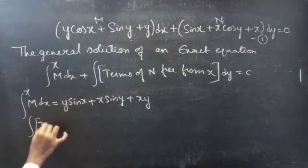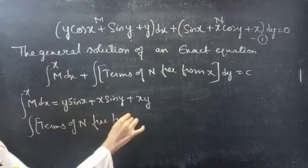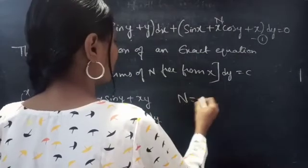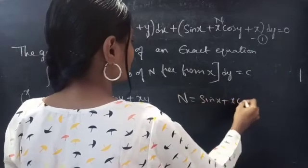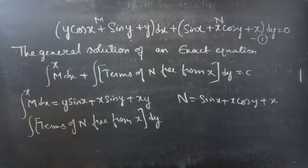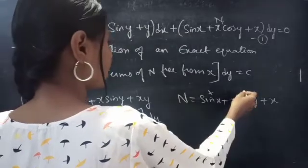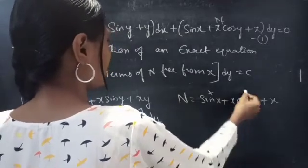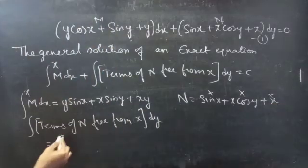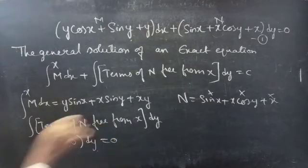Now for the second integral: integral of terms of N free from x, into dy. We have N equals to sin x plus x cos y plus x. There is no term in N which is free from x — sin x contains x, x cos y contains x, and the last term also contains x. So terms of N free from x is 0, and the second integral equals 0.